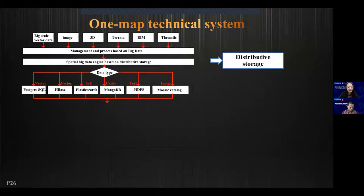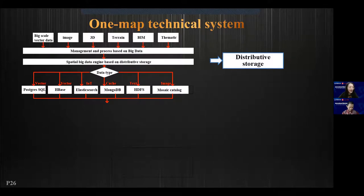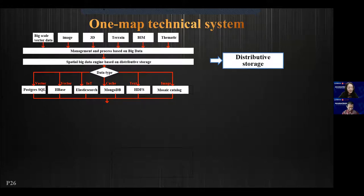For the technical system of this platform, first we have distributed storage for different types of big data — vector data, IoT data, cache data, text data, and image data. We could use different types of databases like PostgreSQL, HBase, Elasticsearch, and MongoDB to support the different types of data.